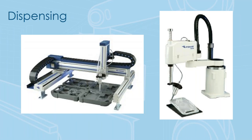Dispensing is another area where we see robot applications. On the left, Cartesian robots are well-suited because you can have most of the robot mechanism out of the way with parts coming in on a conveyor. On the right is a SCARA robot. Articulated arms would also work for dispensing since these typically aren't high-speed applications. Generally though, we see either Cartesian or SCARA robots used for dispensing.